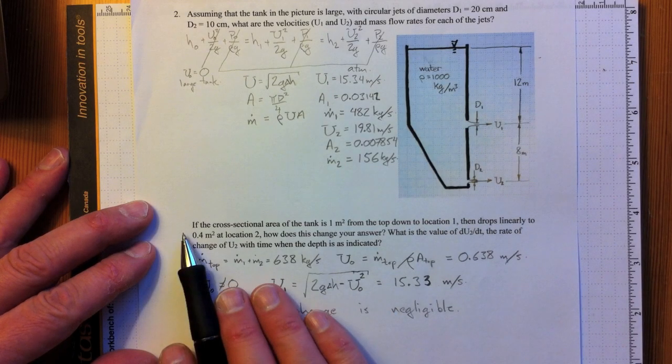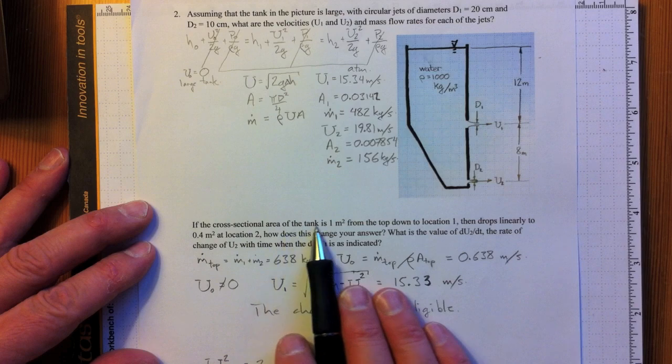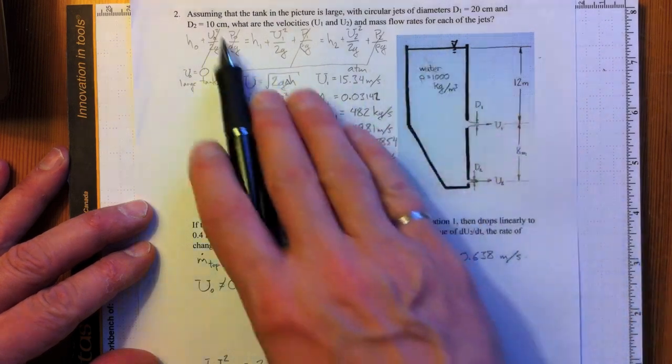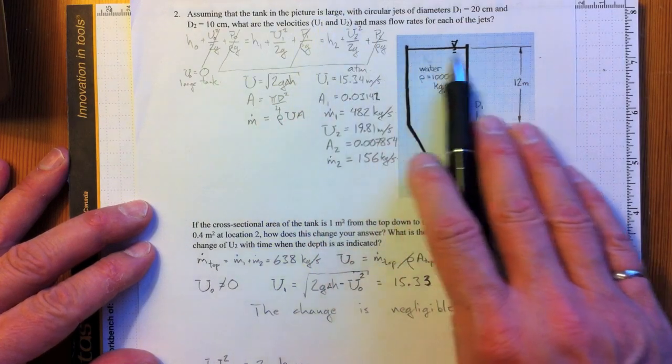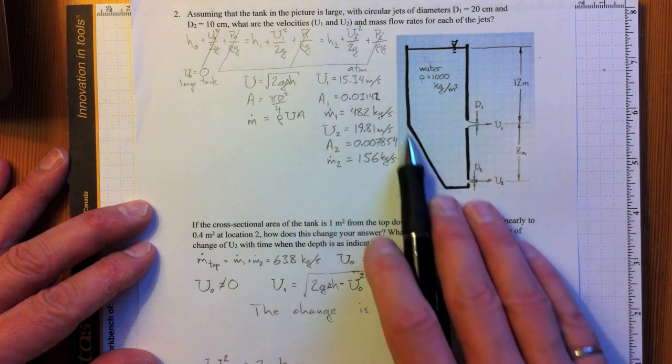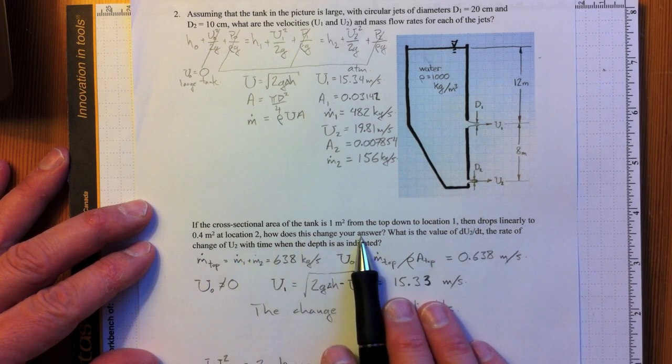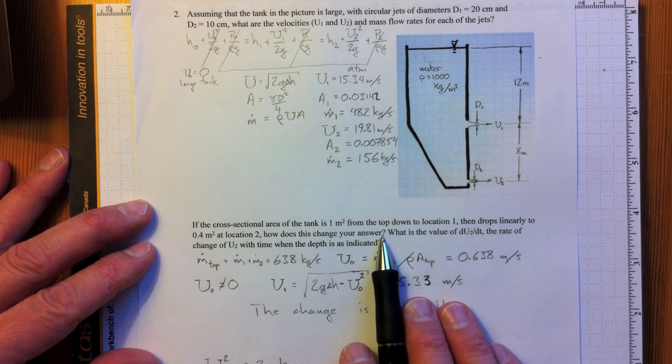For the second part of the question, we're considering a cross-sectional area of the tank of just one square meter. So this is much smaller. It's not a large tank as we assumed in the first part of the question. And it drops off linearly down to location 2. And we want to know how that changes the answer.